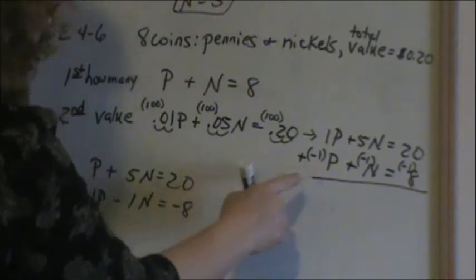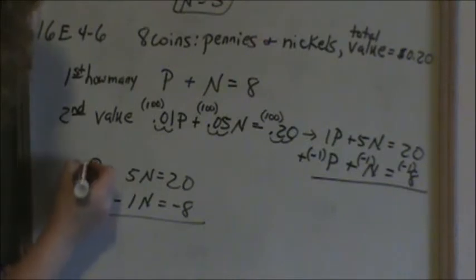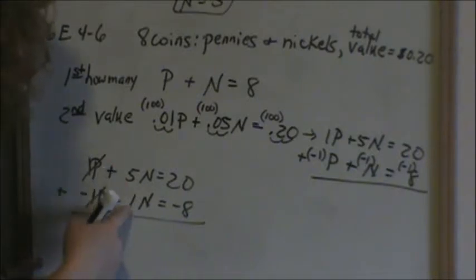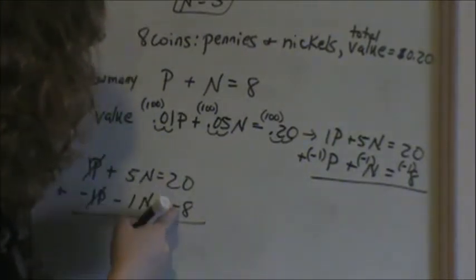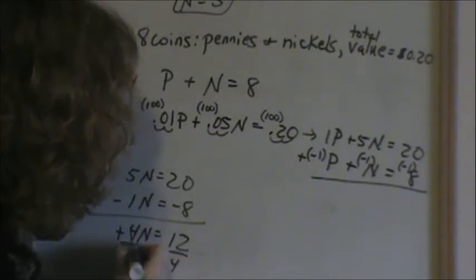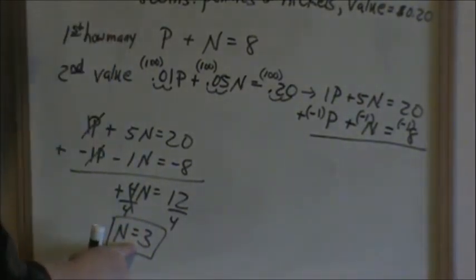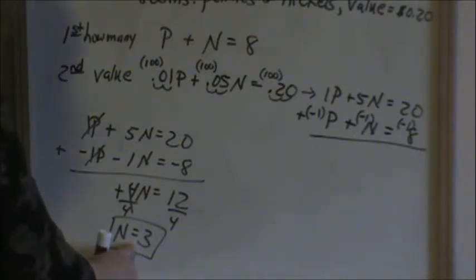Now I'm adding my two equations together. I've got positive 1p and negative 1p — those cancel. I've got positive 5n and negative 1n, which gives me positive 4n. 20 minus 8 is 12. Divide both sides by 4, and n equals 3. Not only should you get positive numbers, you should get a whole number — we will not have 3 and a half nickels or a fractional answer. I can only have whole numbers for the number of coins.